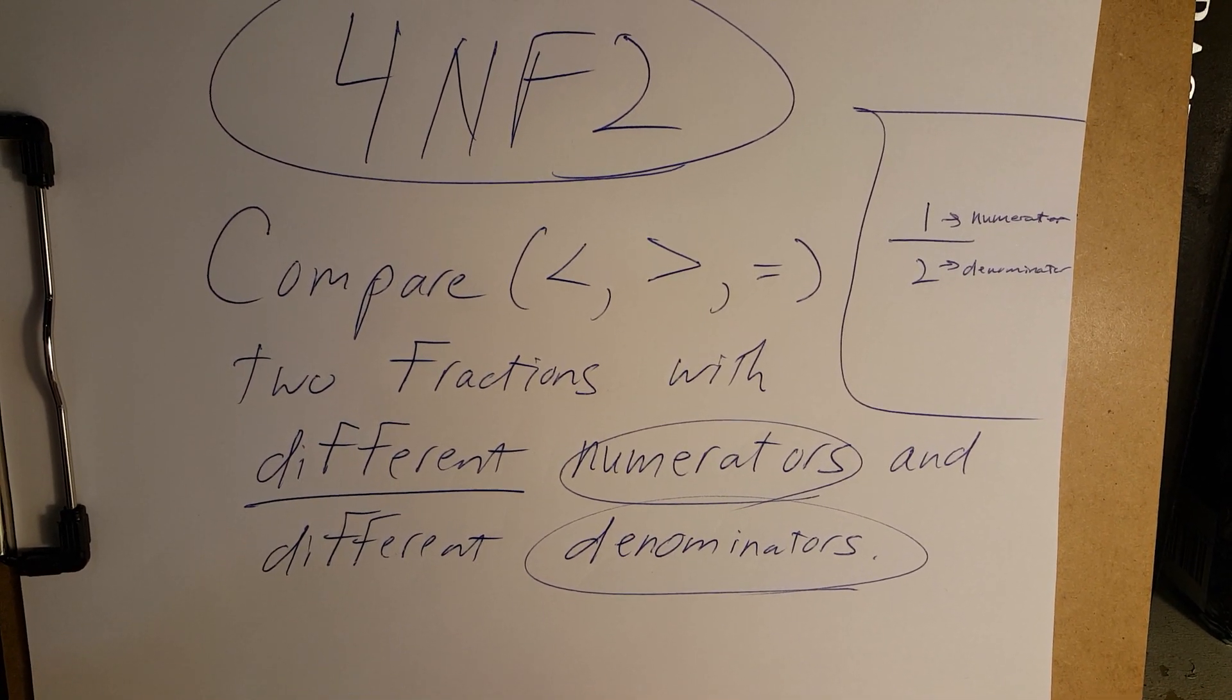Next standard, 4NF2, is to compare two fractions with different numerators and different denominators. Remember, a numerator is the top number, and the denominator is the bottom number. First sign is less than, then we have greater than, and equal to.